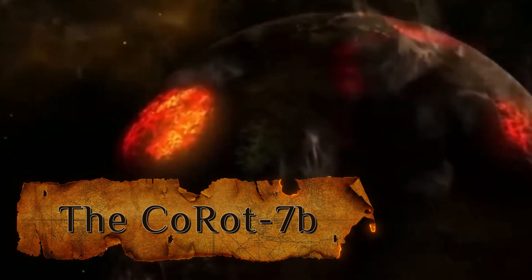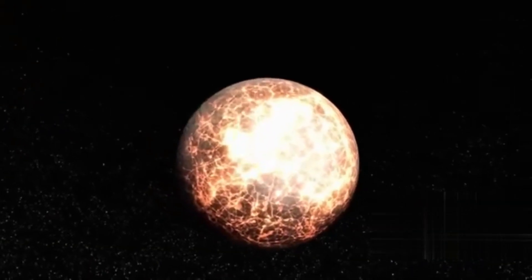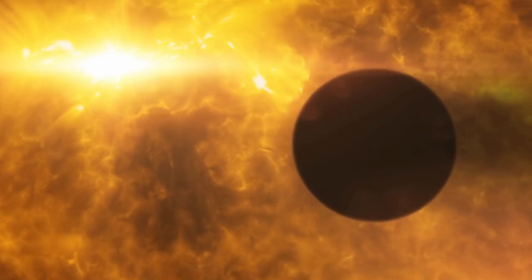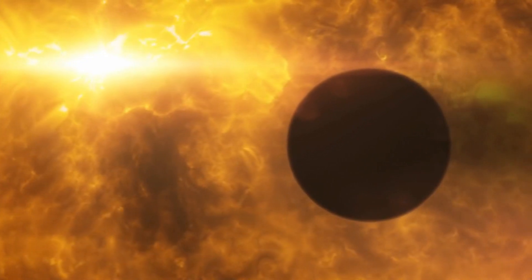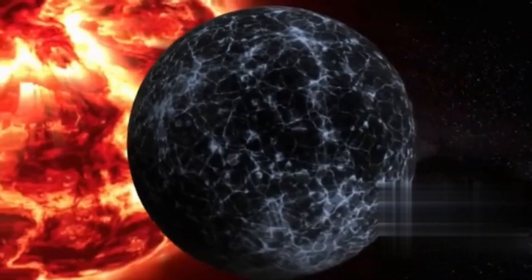Number 5: Korat 7b. Korat 7b is a little bigger than 1.5 times the size of Earth. It orbits its sun every 20 hours, which equals 0.9 Earth days. Some figures say it is about 1.5 billion years old.